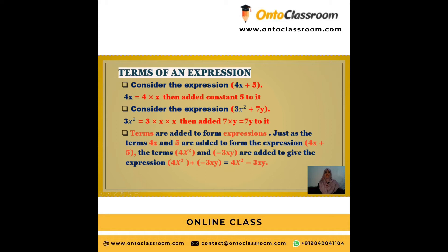Also, the degree can be raised. The terms 4x² and -3xy are added to give the expression 4x² + (-3xy). The bracket is used here because there are two signs — plus and minus — which together form 4x² - 3xy.